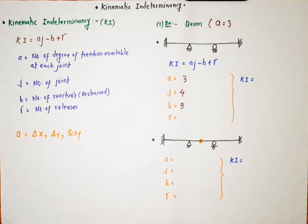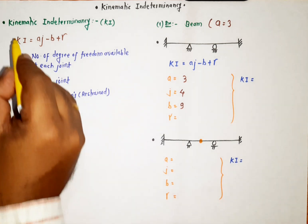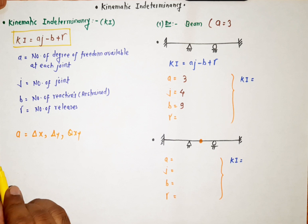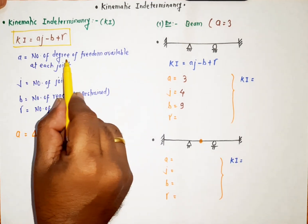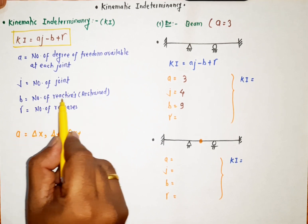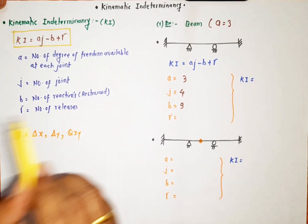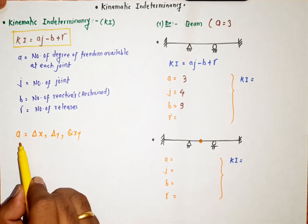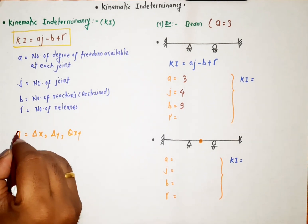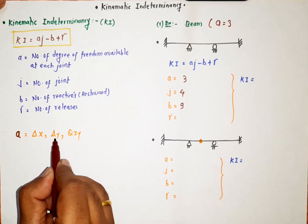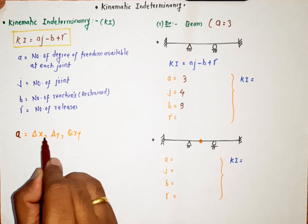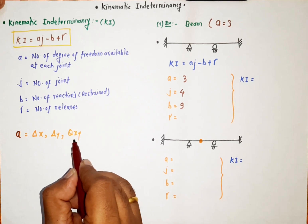Kinematic indeterminacy of a structure can be calculated with the formula: kinematic indeterminacy = aj - b + γ, where a is the number of degrees of freedom available at each joint, j is the number of joints, b is the number of reaction restraints, and γ is the number of releases. There are three degrees of freedom available at each joint: delta x (horizontal displacement), delta y (vertical displacement), and theta xy (rotation).